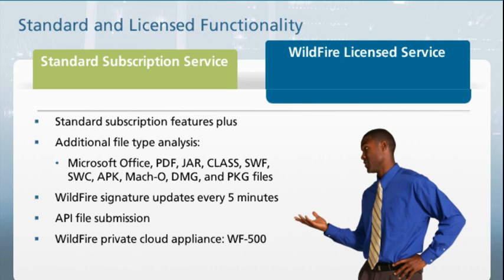There are two different content package formats for Wildfire content updates: content packages for 7.1 and later, and content packages for 7.0 and earlier. These content packages contain the same set of signatures. A license also enables users to programmatically submit files for analysis to Wildfire using the Wildfire XML API. For more information about the Wildfire XML API, see the Wildfire API reference guide at paloaltonetworks.com.